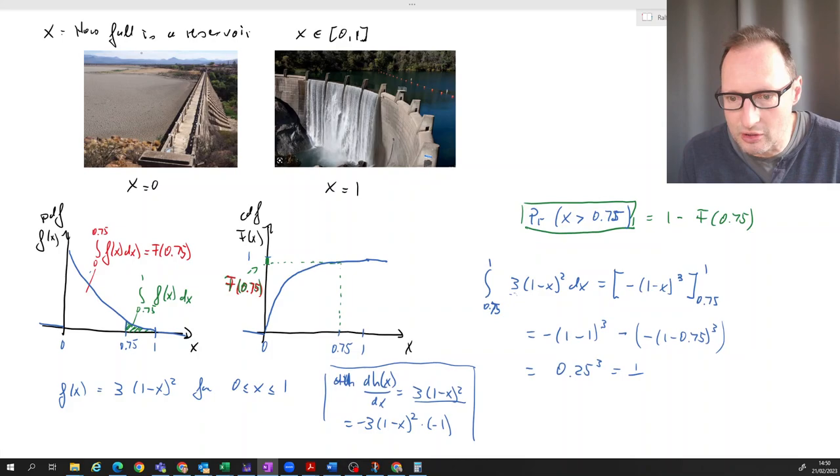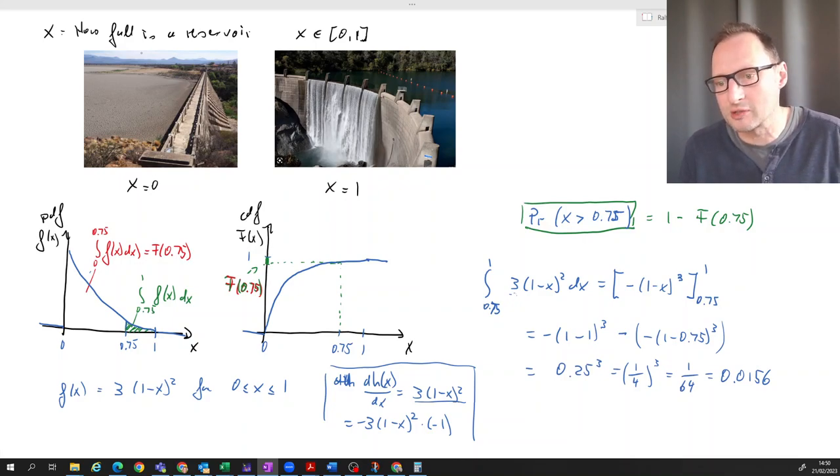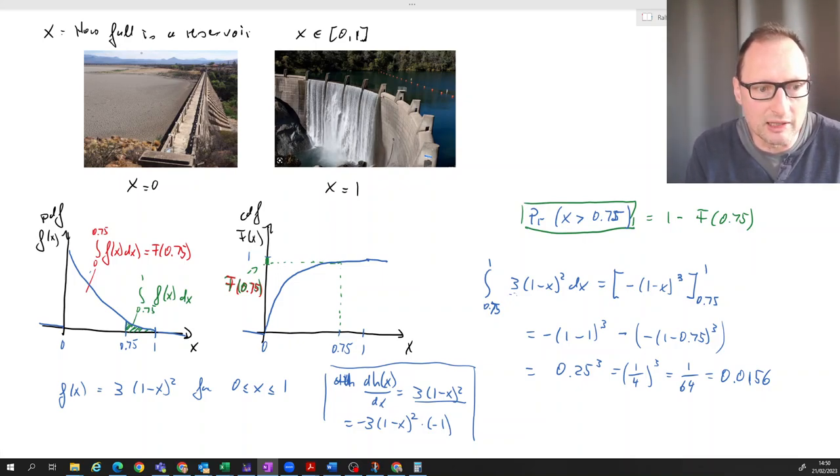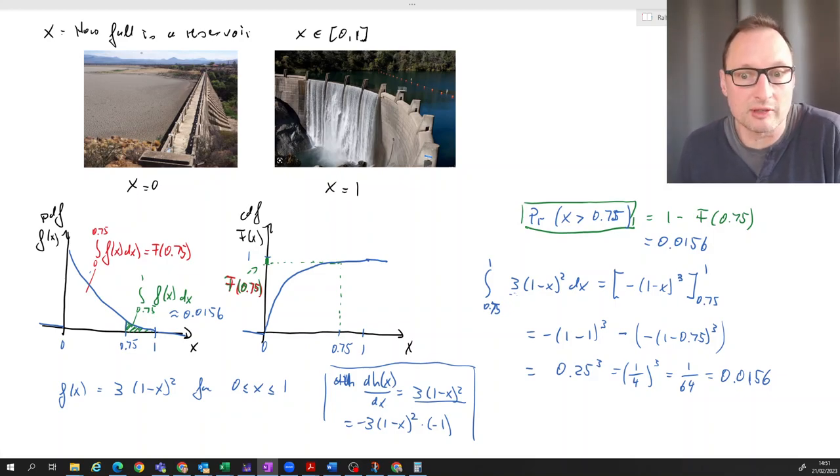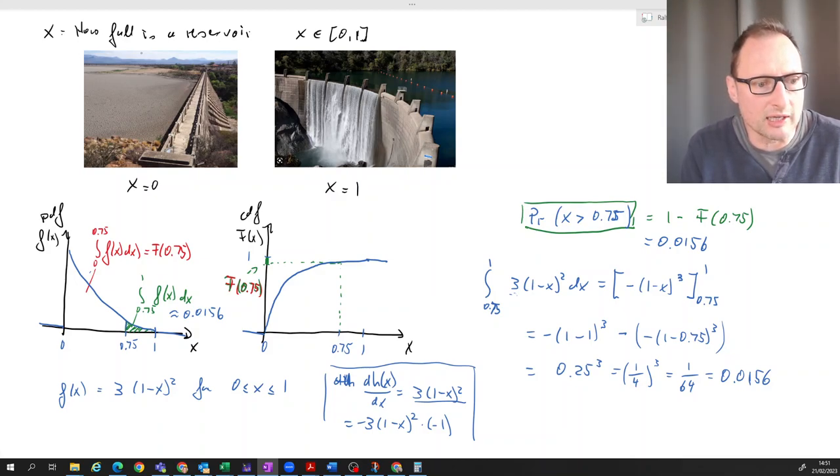So that is 0.25 to the power of 3. This is 1/64, and that is, if you plug that into your calculator, you will get approximately 0.0156. So a little less than 2 percent probability. So this probability here is approximately 0.0156. So the probability that the reservoir is fuller than 75 percent full is less than two percent if the level of the reservoir is distributed according to this PDF.